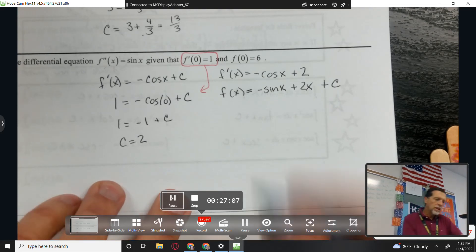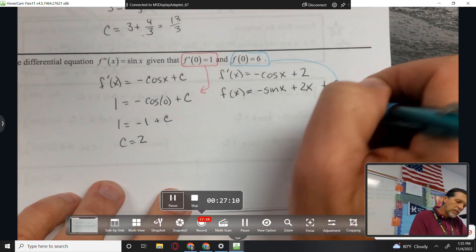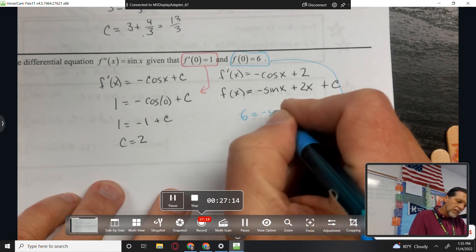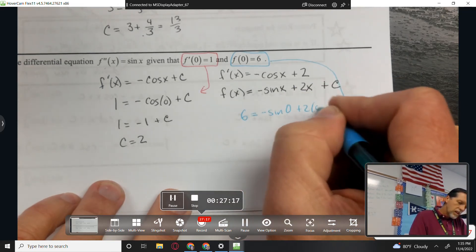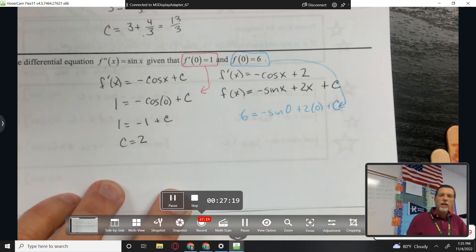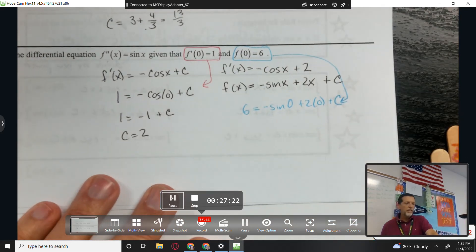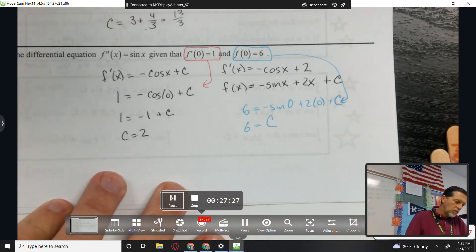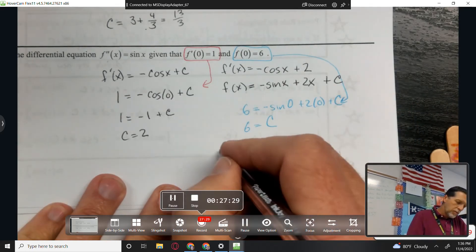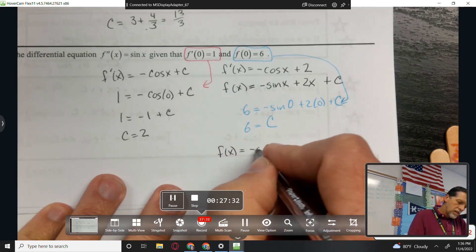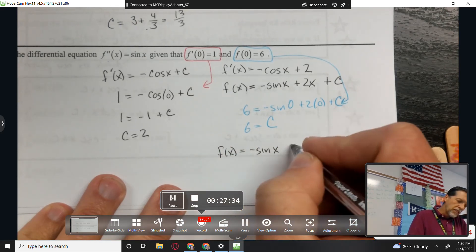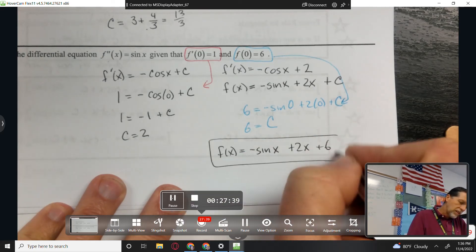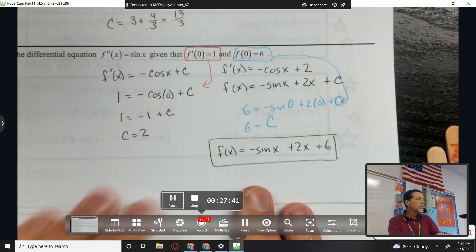Now we can use our second piece of information. If we plug in 0, we're supposed to get 6. Let's see, the sine of 0 is 0, 2 times 0 is 0, so c is 6. So negative sine x plus 2x plus 6 is the solution to our differential equation.